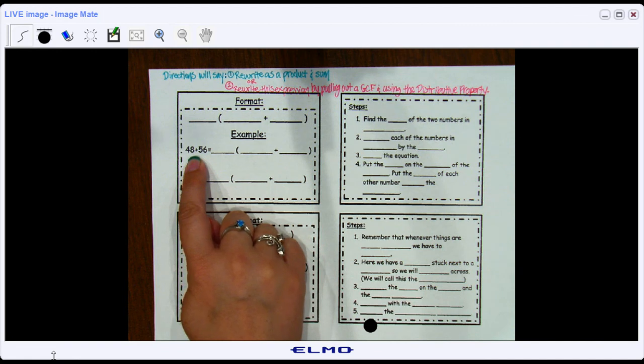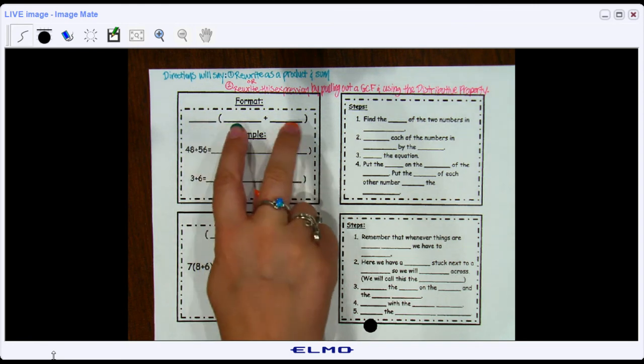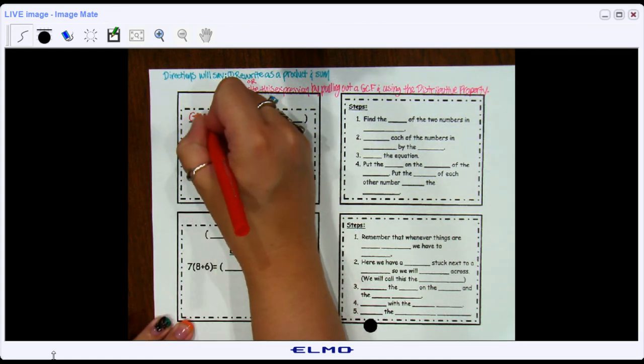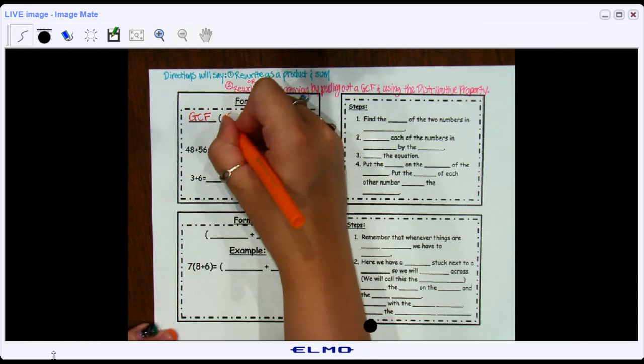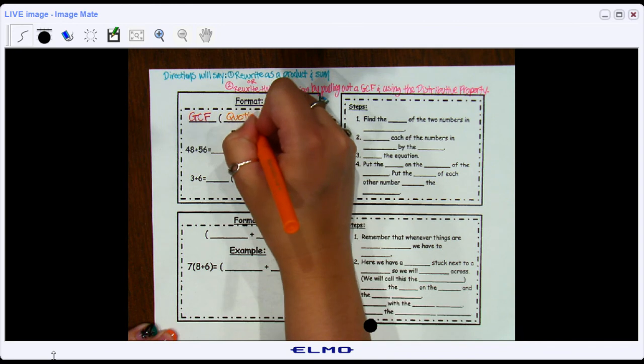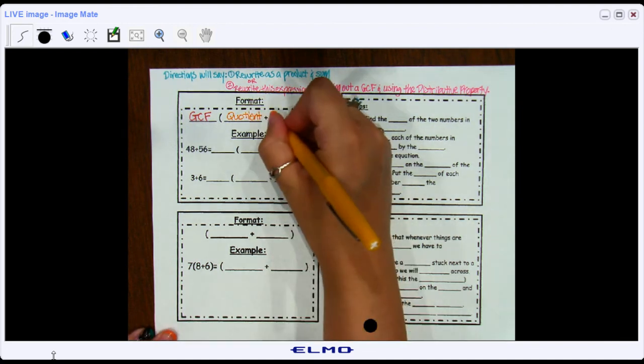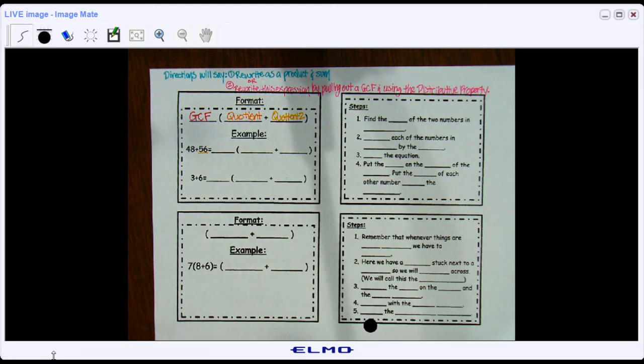And then I'm going to rewrite it as a product, so that's something being multiplied by a sum. And that product is going to be the GCF out in front, and then quotient one, which is going to be used with this number, and quotient two, which is going to be used in some way with this number.